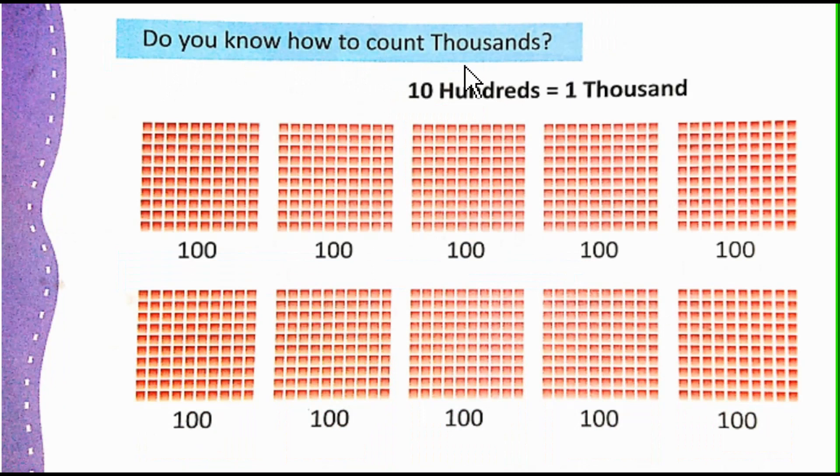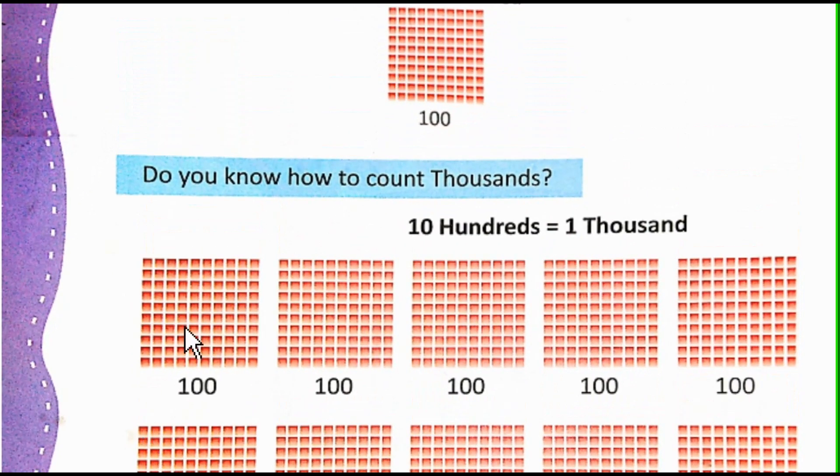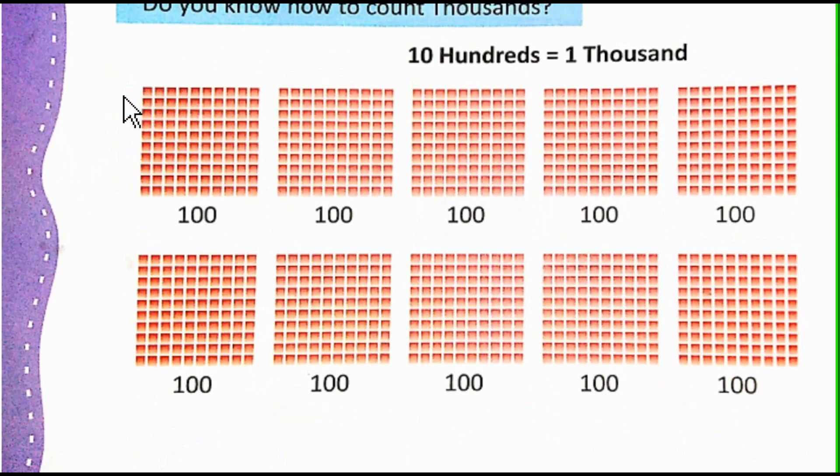Do you know how to count thousands? 10 hundreds is equal to 1000. This is 100. From here 100, like 1 ten, 2 tens, 3 tens, 4, 5, 6, 7, 8, 9. So 10 tens is equal to 100.